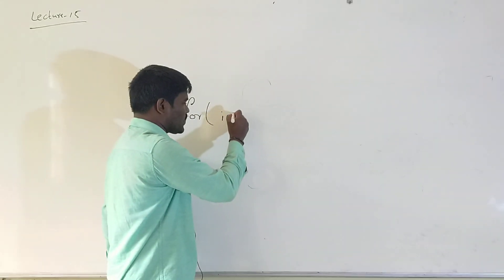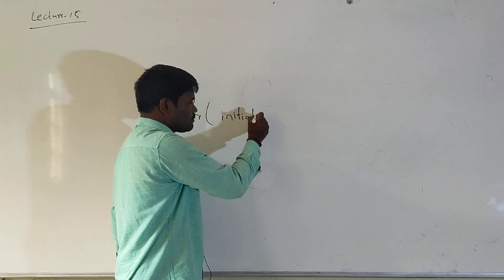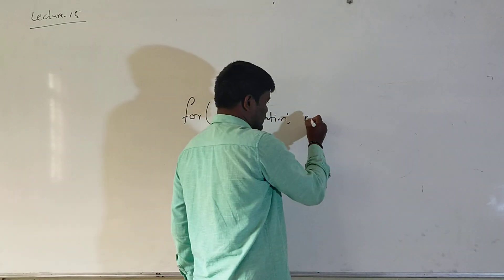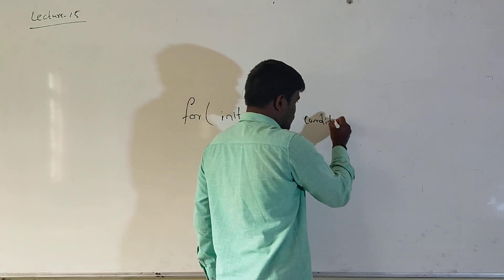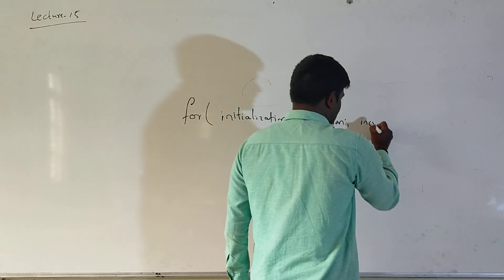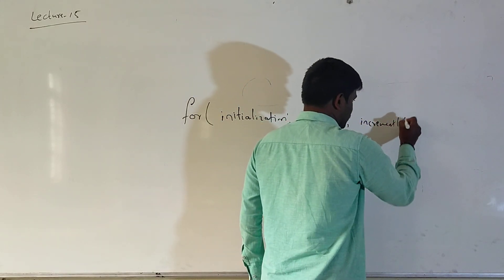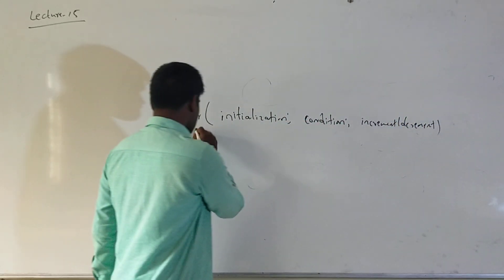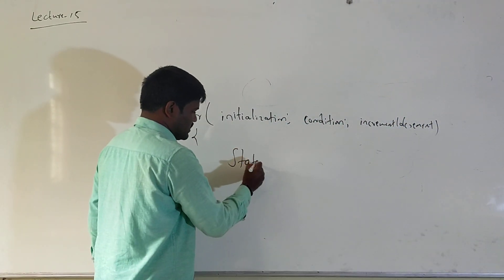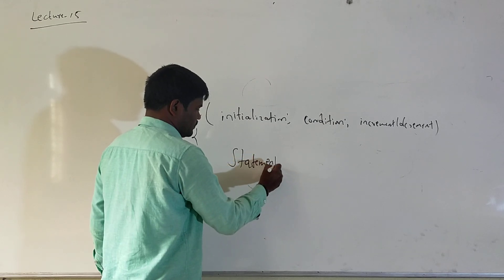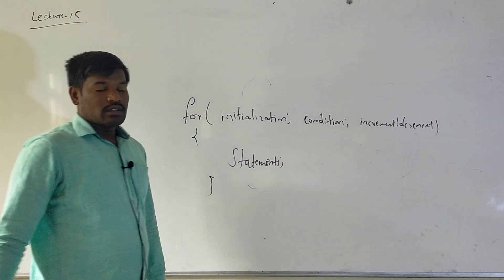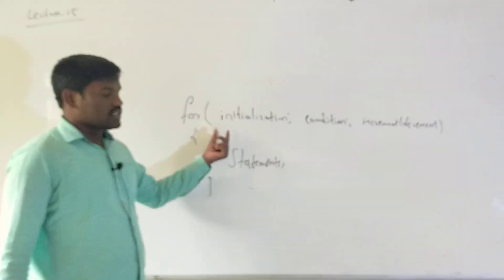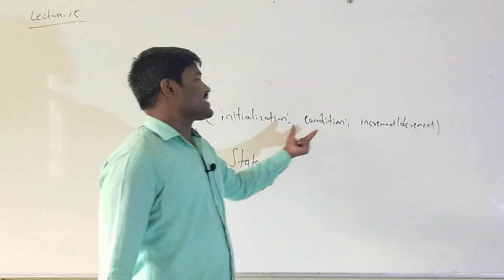The syntax of the for loop has three parts: initialization, condition, and increment or decrement. Inside the body of the loop you write the statements. For is a keyword. Within the for loop there are these three steps.